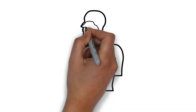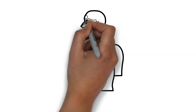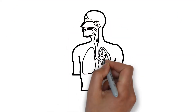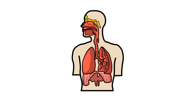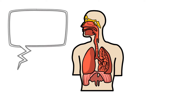The respiratory system is a series of organs that collects oxygen and gets rid of carbon dioxide, allowing us to breathe. The mechanics of breathing, or respiration, involve two key functions.